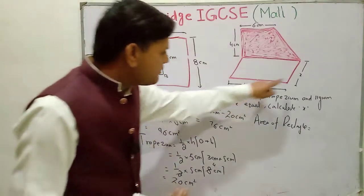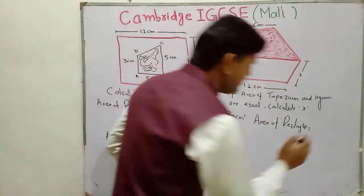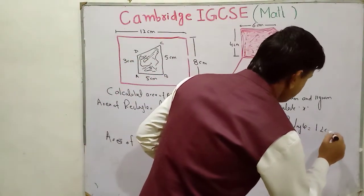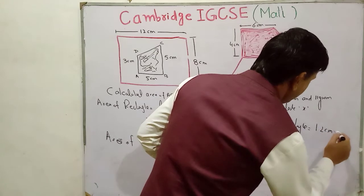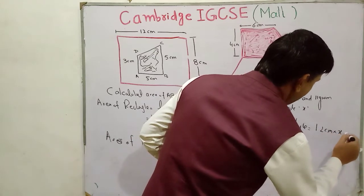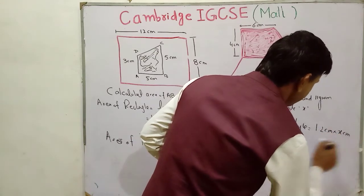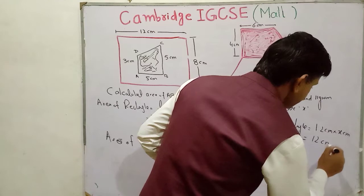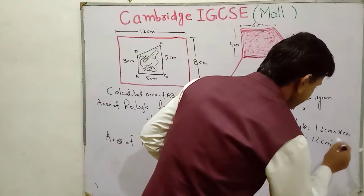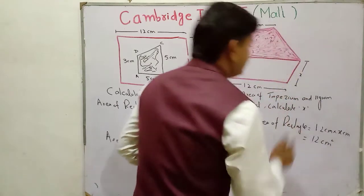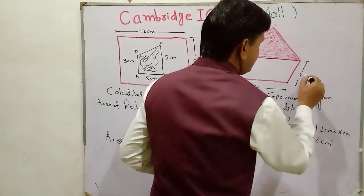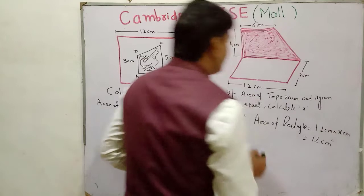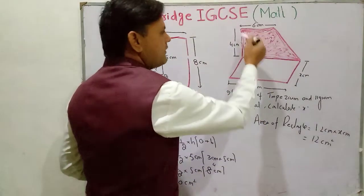Area of rectangle is equal to 12 centimeters multiplied by x centimeters, giving 12x centimeters squared. Now find the area of the trapezium.